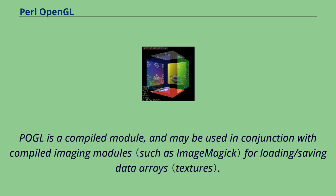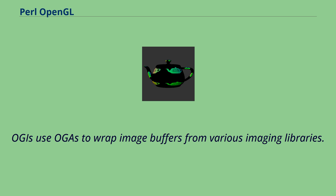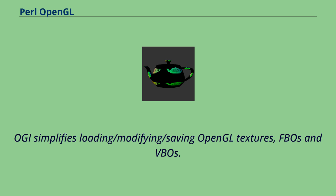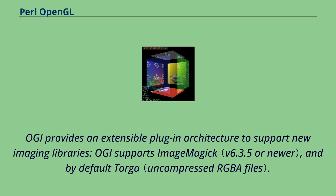Pugl is a compiled module, and may be used in conjunction with compiled imaging modules for loading and saving data arrays. OGAs use OGAs to wrap image buffers from various imaging libraries. OGAs simplify loading, modifying, and saving OpenGL textures, FBOs, and VBOs. OGI provides an extensible plug-in architecture to support new imaging libraries.